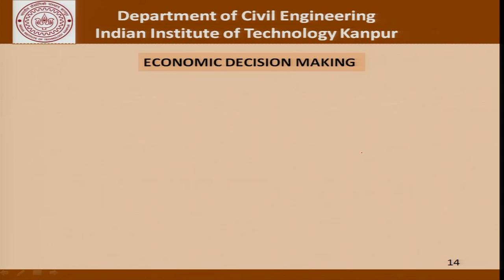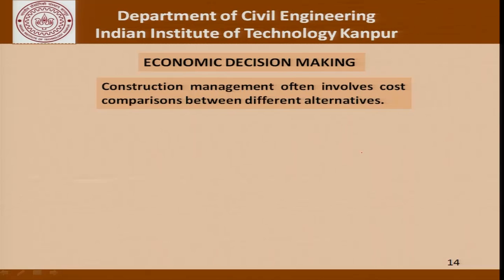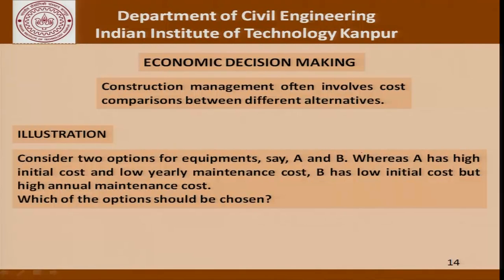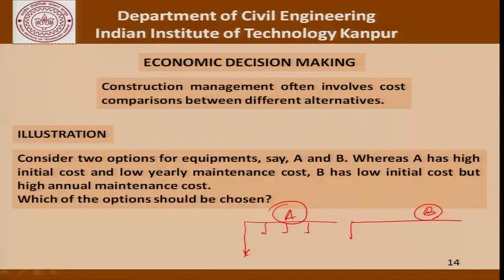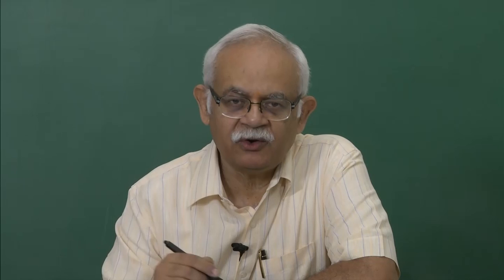Going forward, let us talk about economic decision making. Construction management involves cost comparisons between different alternatives, commonly when buying equipment with different capital costs and maintenance costs. Consider two options A and B: A has a high initial cost but low yearly maintenance, while B has a low initial cost but high annual maintenance. The cash flow diagram for A shows high initial outflow but lower subsequent costs, and for B it is the opposite. We can compare these options using the principles discussed.